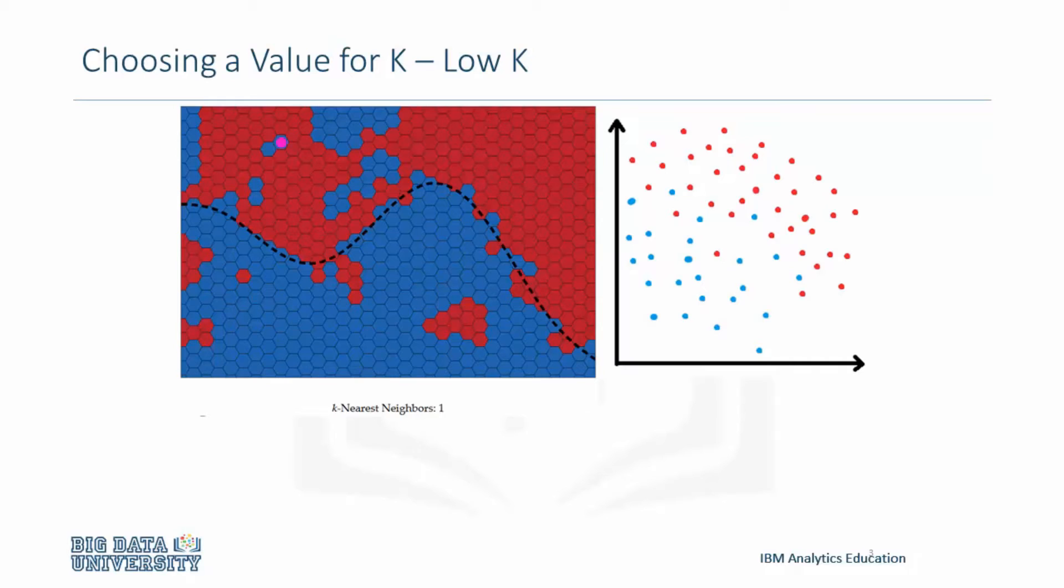Okay, so keeping that in mind, it could look something like this. A low value of k causes a highly complex model, which causes an overfitting of the dataset. Overfitting is bad, as we want a general model that works for any data, not just the trained data.